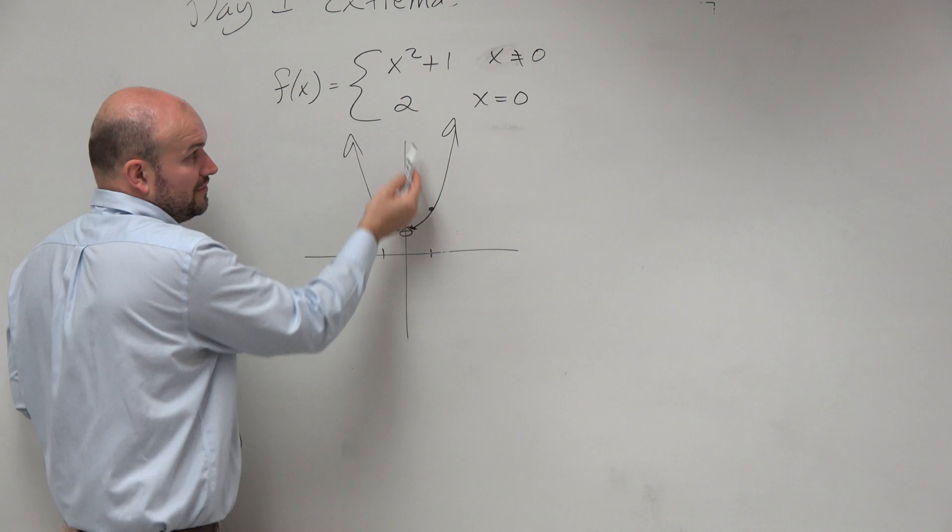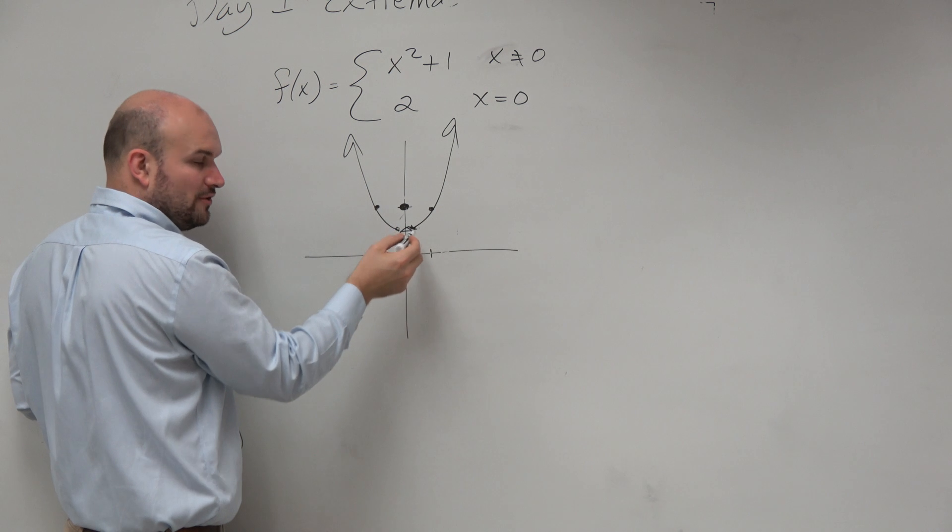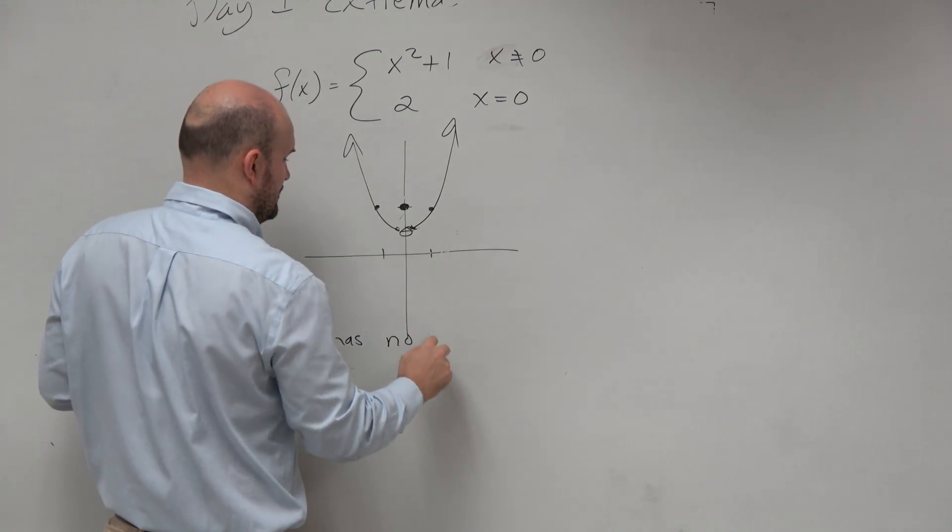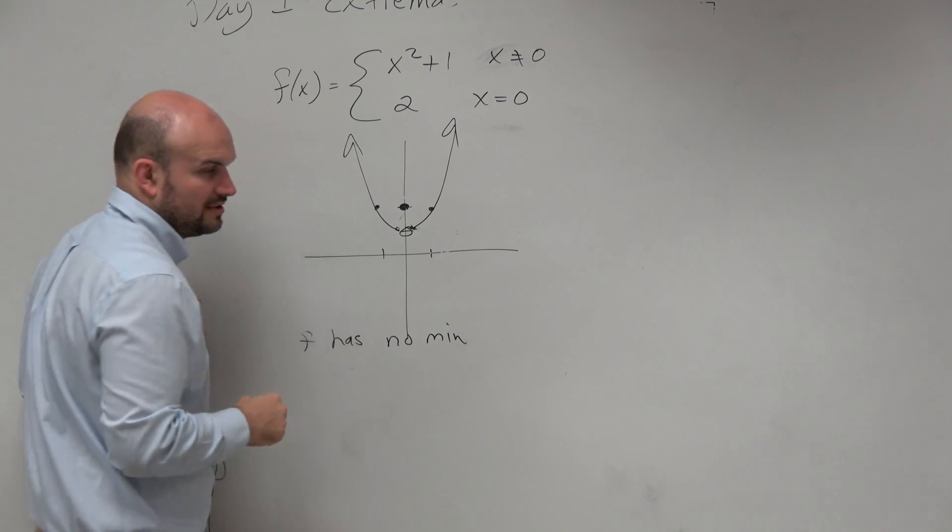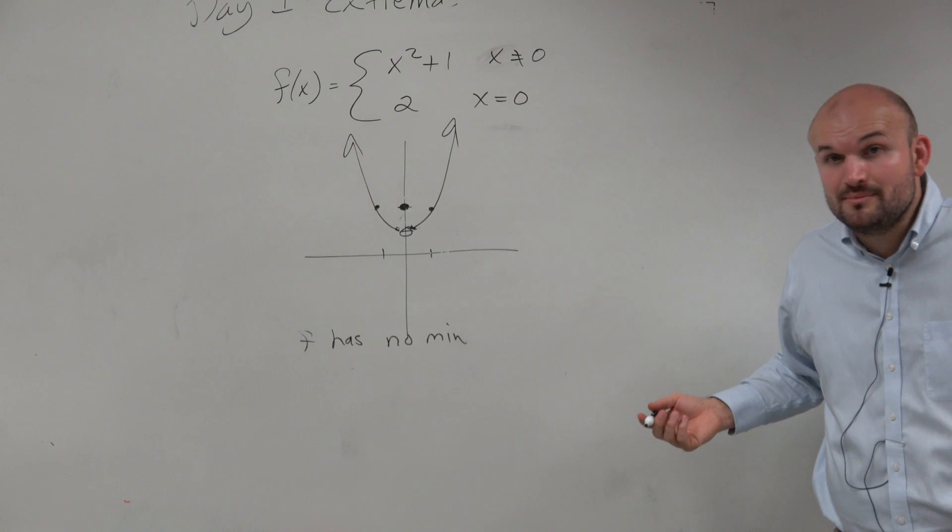So at 0, the value is 2, but that's not the lowest value. The lowest value is to the left and to the right. But since we have a hole here, f has no minimum. We'll kind of summarize all this in just a second, but f has no minimum.